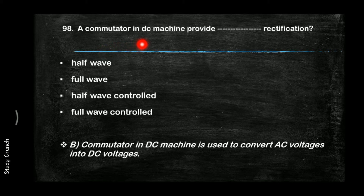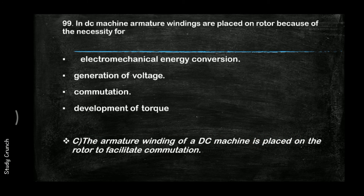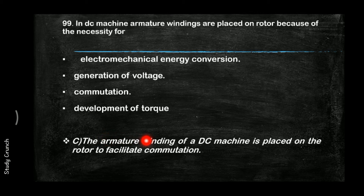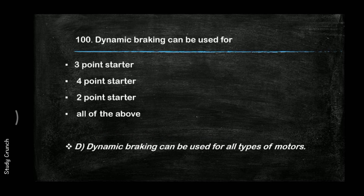A commutator in a DC machine provides full-wave rectification, converting AC voltage into DC voltage. In a DC machine, armature windings are placed on the rotor because of the necessity for commutation, to facilitate the commutation process.